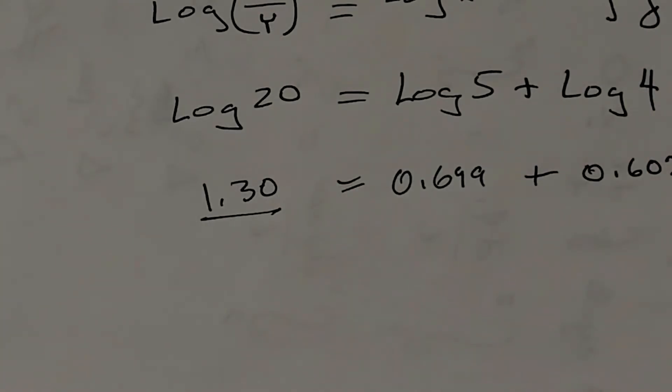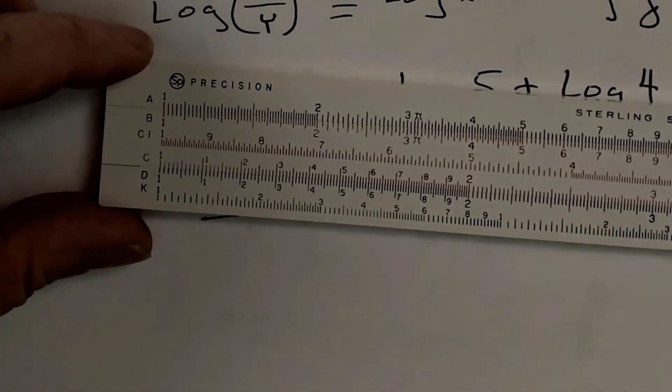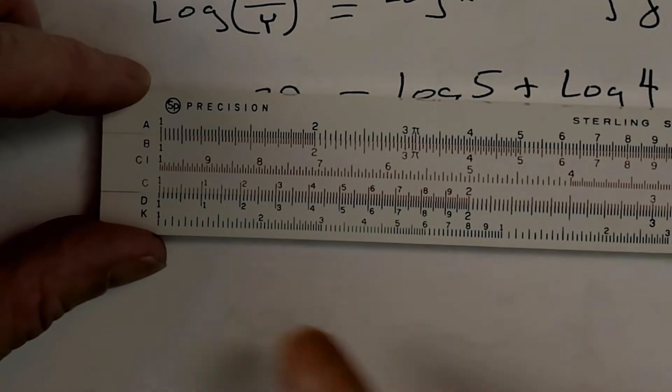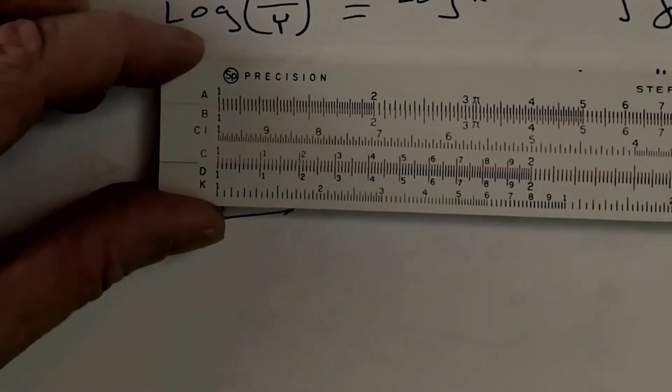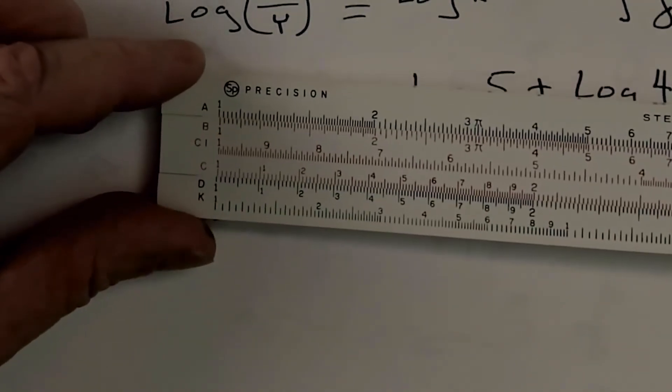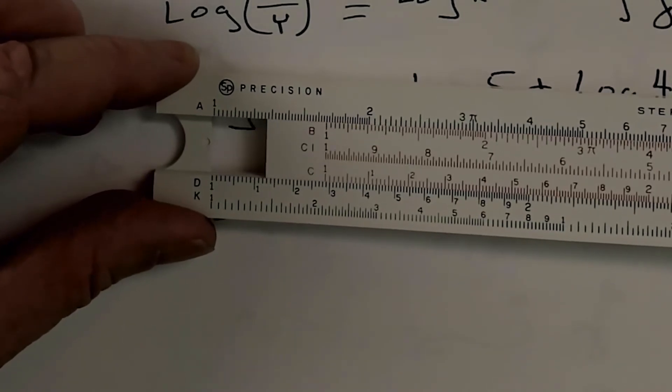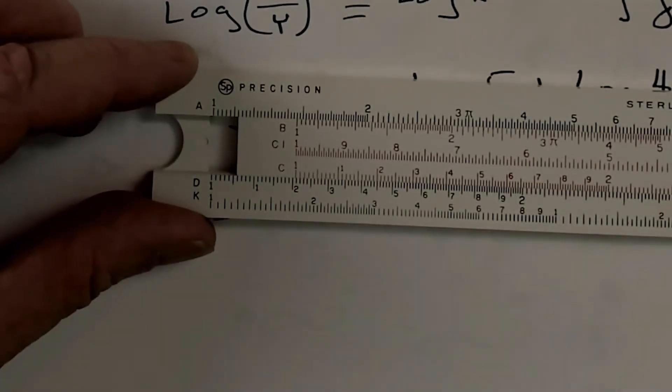Now, let's see how this works on a slide rule. So, here is a nice little British slide rule. We've got two scales on it. We've got a C scale and a D scale. And as you see, the C scale is on the slide and the D scale is on the stator.